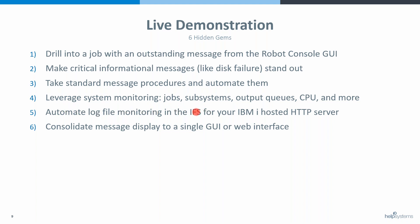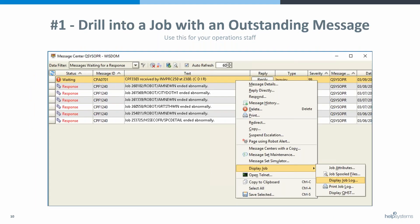We'll also look at application log monitoring — how you can look at your IFS logs for critical errors and be alerted quickly. Finally, we'll look at some consolidated message displays — whether it's a single Console GUI, Robot Network, or Insight. These aren't necessarily in priority order; this is just the order we chose. Let's start with number one.